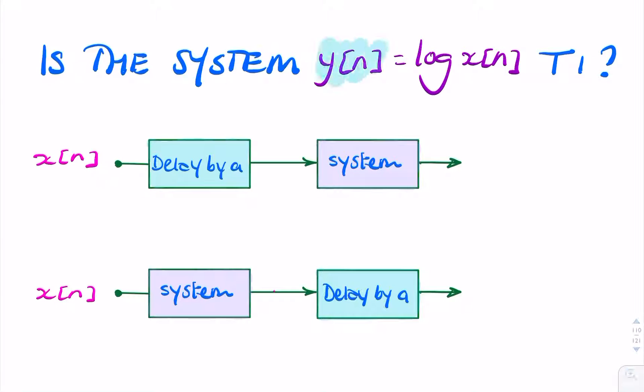In this question, we're given a discrete time system that relates the input x of n to the output y of n. So y of n is log x of n, and we're asked, is it a time invariant system?